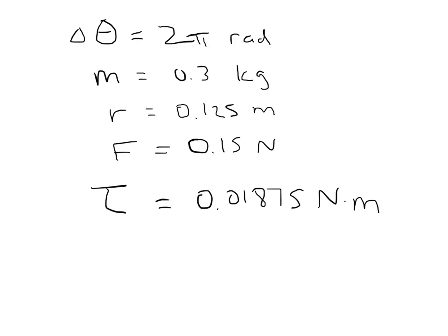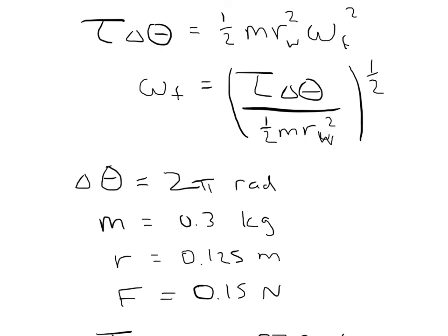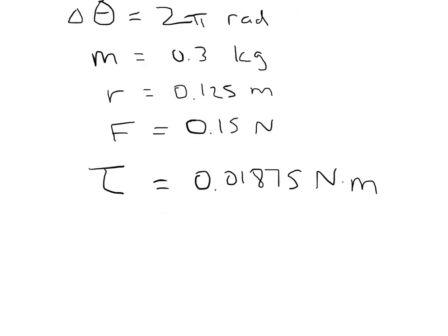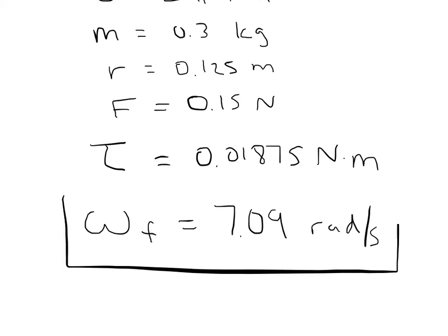And now, coming back up here to our expression for omega final, now I have everything that I need. I have the torque right here, the change in angle, I have the mass of the wheel, and the radius of the wheel. So what I can do is plug that all in and get that omega final is equal to 7.09 radians per second. And this is after the hamster wheel has gone around one revolution.